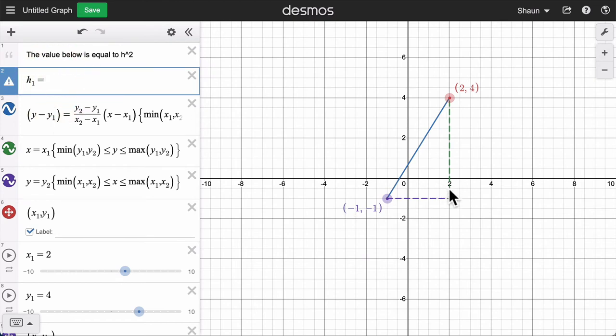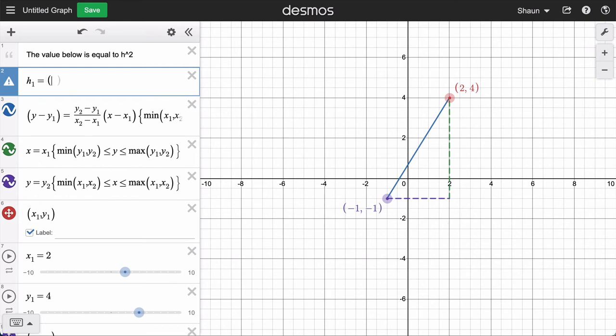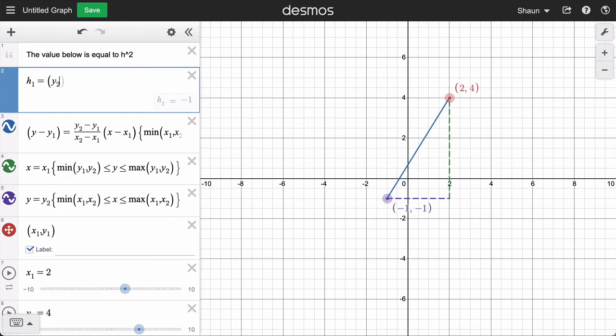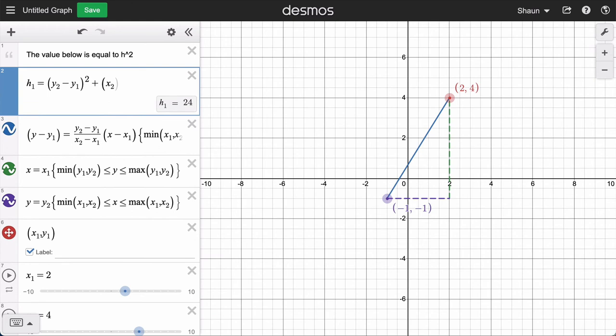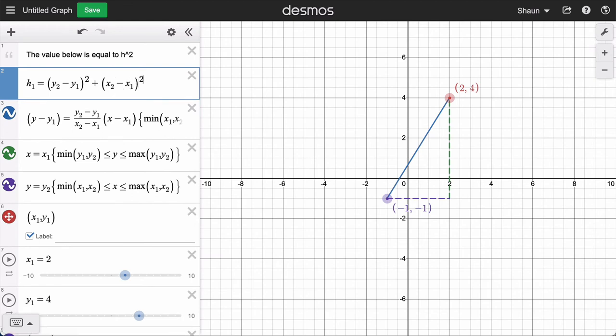I want to get this vertical leg first. Let's say that is y2 minus y1. And we're going to square that. And then the other leg is going to be x2 minus x1. We're going to square that.